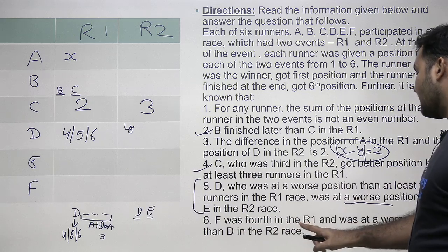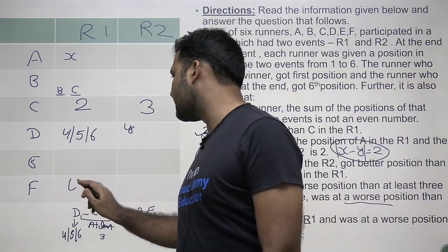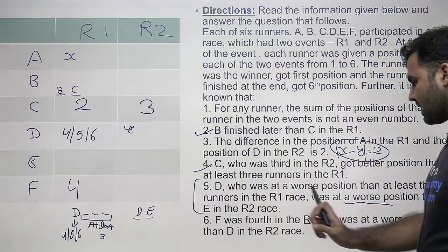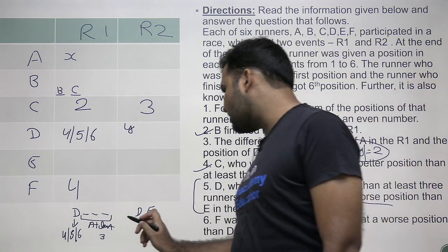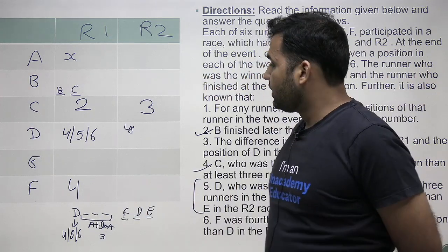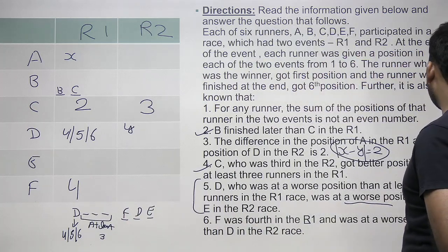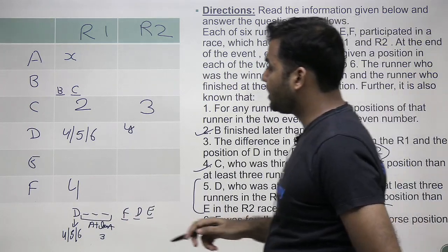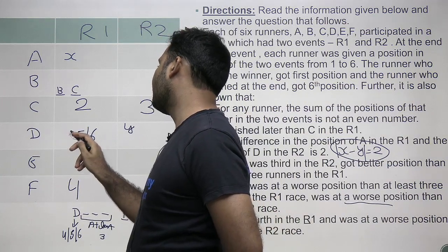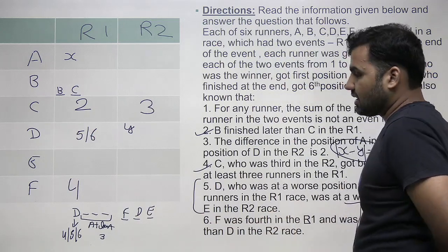F was 4th in Race 1 and was at a worse position than D in Race 2. Since F already holds rank 4 in R1, we can eliminate D having rank 4 in R1 as well. So the possible ranks for D in R1 are now narrowed down to either 5 or 6.